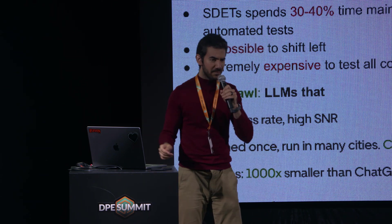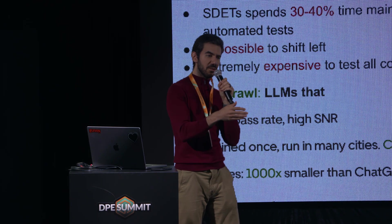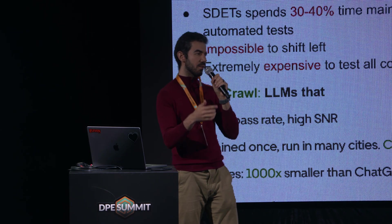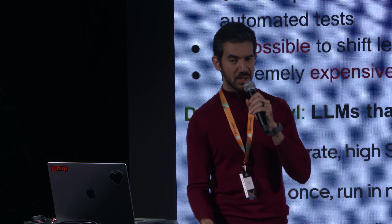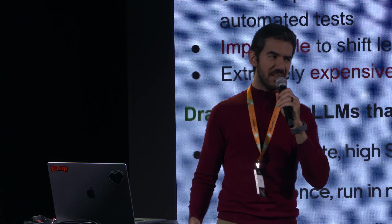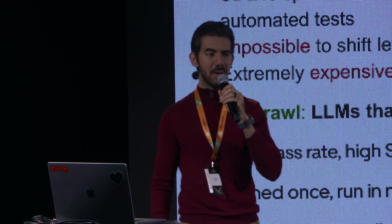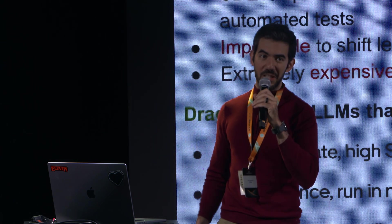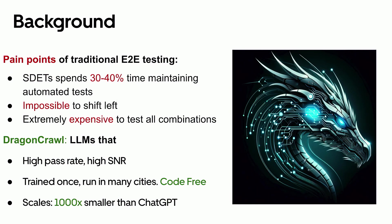At a place like Uber, we spend thousands of developer hours per month updating those scripts. As a consequence, we cannot shift left — because the signal-to-noise ratio is so low, we can't run tests to block PRs or run them as early as possible. With 700 mobile engineers, 3,000 backend engineers, running in thousands of cities and thousands of concurrent experiments, it's basically impossible to test all of that manually.